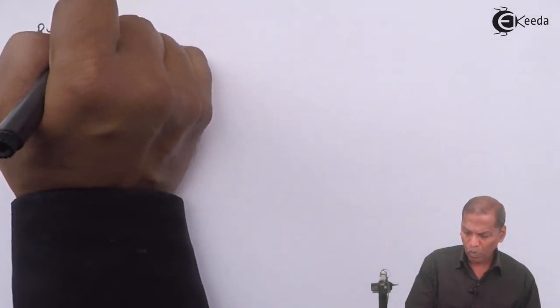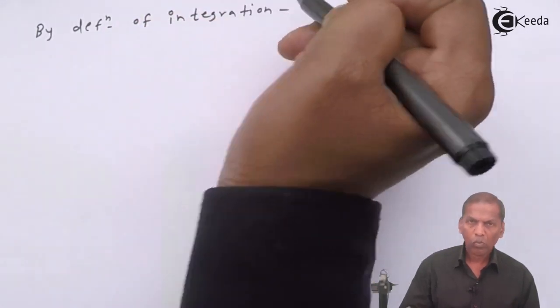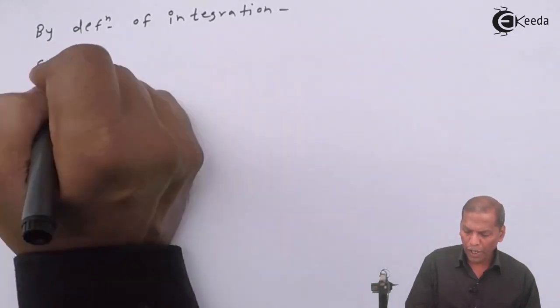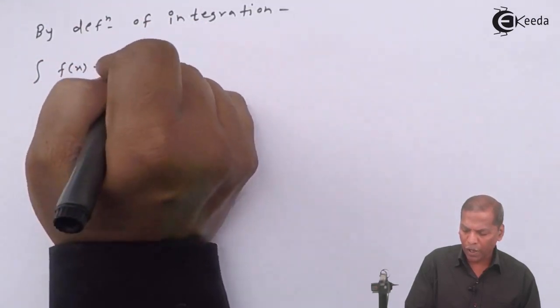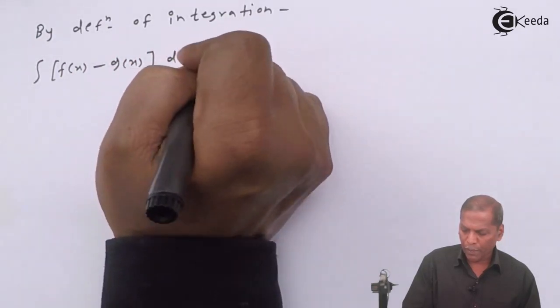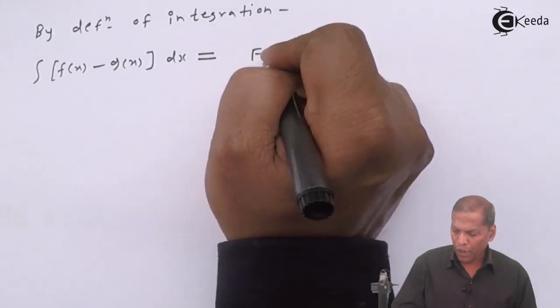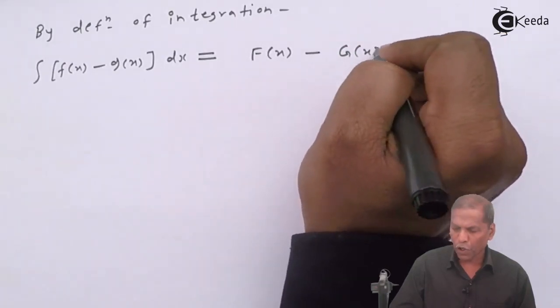Therefore, by definition of integration, the next step will be: integral of [f(x) - g(x)] dx equals F(x) - G(x).